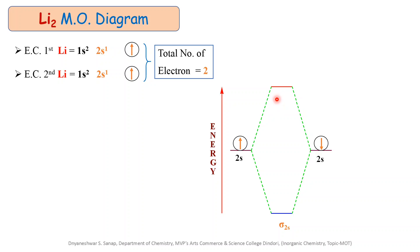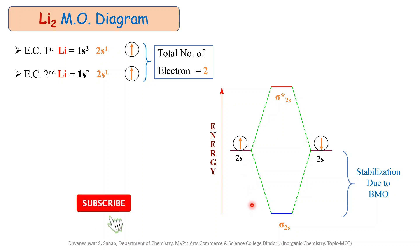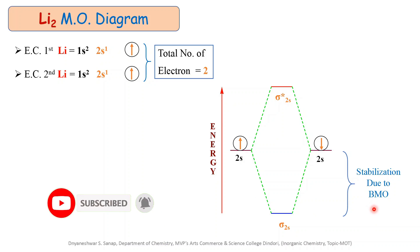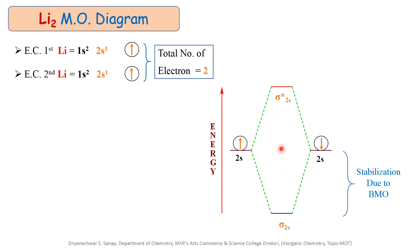Similarly, the higher energy molecular orbital is called the sigma anti-bonding molecular orbital, denoted by sigma star 2s. The bonding molecular orbital is called a stabilizing orbital because whenever electrons come from higher energy to lower energy, they stabilize and release potential energy. The anti-bonding molecular orbital is called a destabilizing orbital because its energy is higher compared to the atomic orbital energy levels.